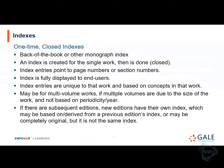The one-time closed index is the back-of-the-book or monograph index. The index is created for a single work, and then it's done — that's why they call it closed. Index entries point to page numbers or section numbers, the index is typically displayed to users, and the entries are unique to that work. Even if a book has subsequent editions, each edition has its own index, because pagination and flow have probably changed.